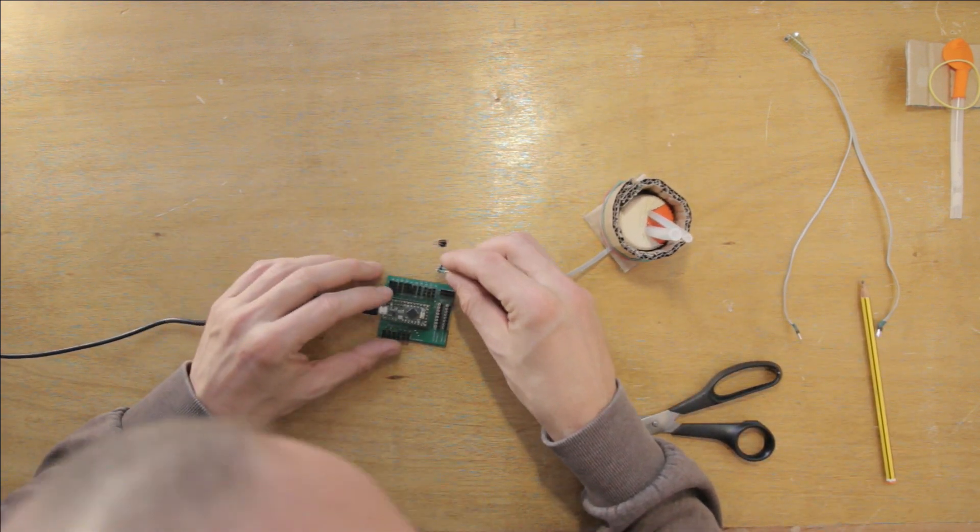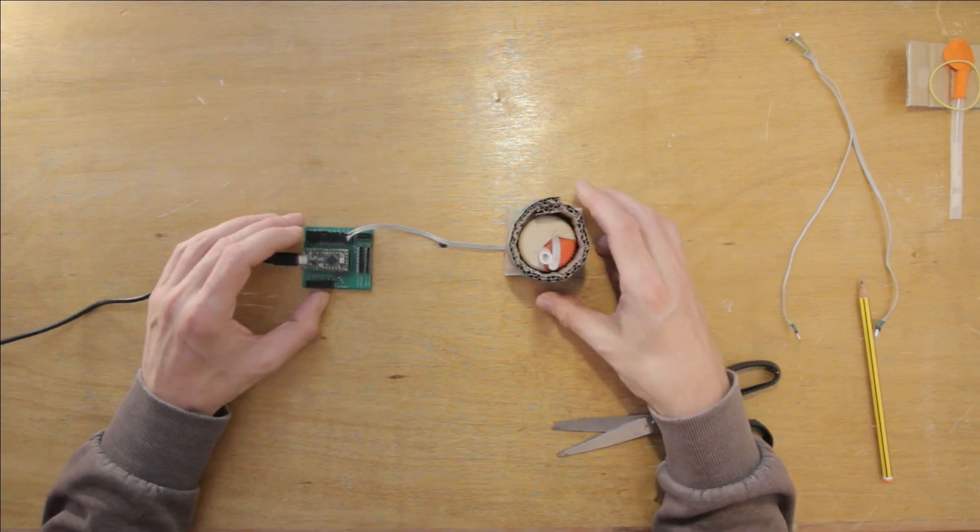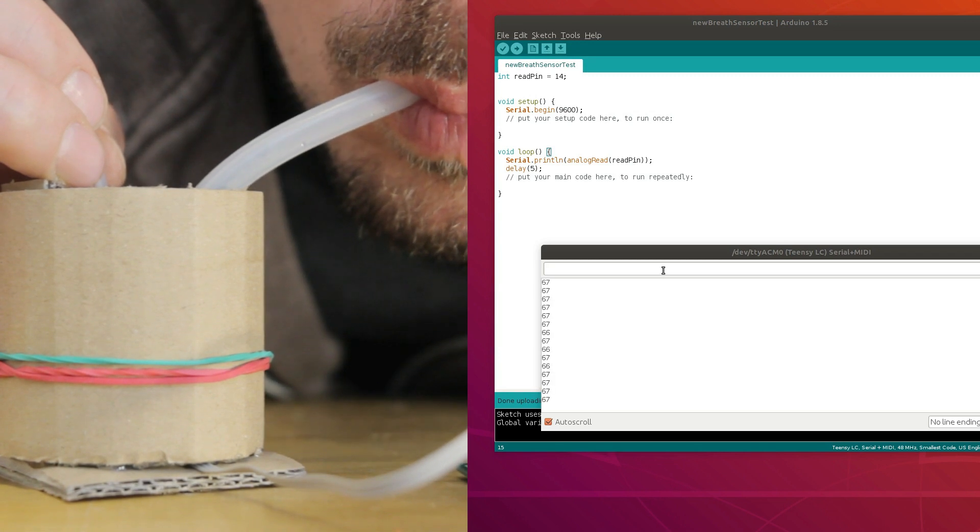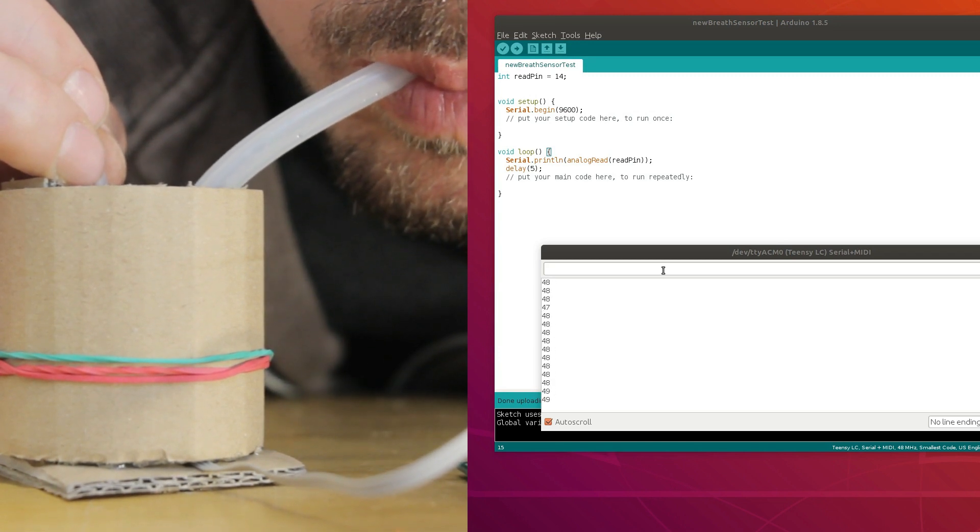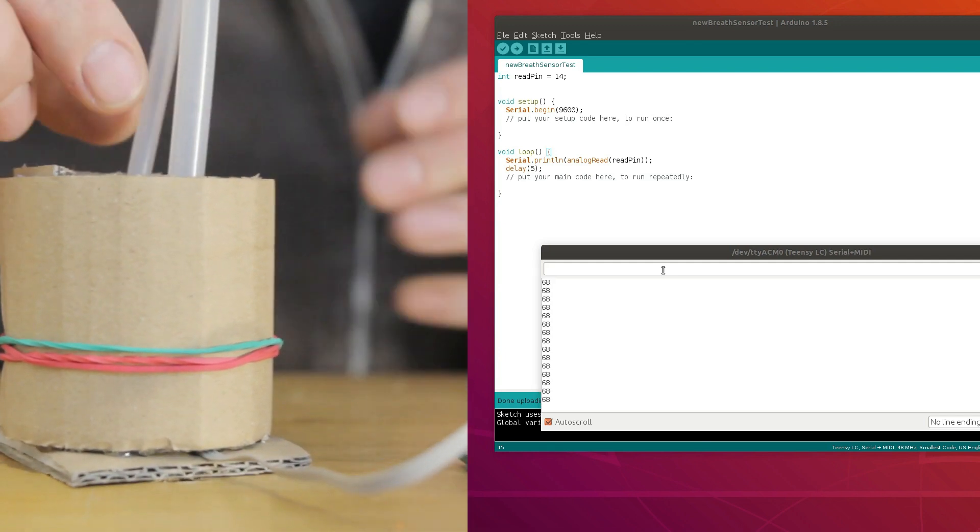That was quick mostly because the basic concepts and structures were brought over from the two previous builds. So let's try to upload the basic code from before and see how it works. Hmm interesting. The positive pressure part of the reading is not getting much resolution. The negative side works much better.